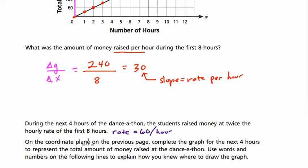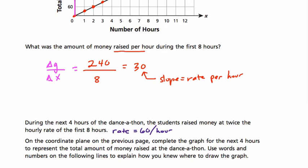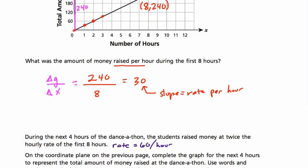On the coordinate plane on the previous page, okay this is on two pages originally, complete the graph for the next four hours to represent the total amount of money raised at the dance-a-thon. Use words and numbers on the following lines to explain how you knew where to draw the graph. So I'm going to draw it and explain it as I go, kind of explain the things you might write down.